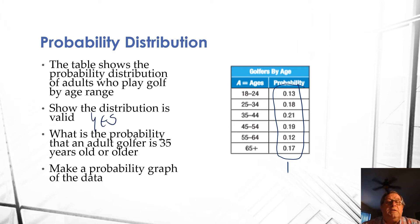Now, the second question, what is the probability that an adult golfer is 35 years old or older? Well, in our age range here, we've got 35 to 44, 45 to 54,